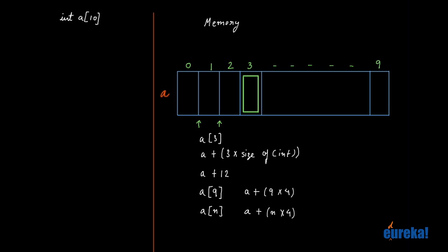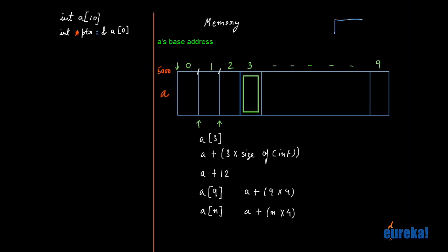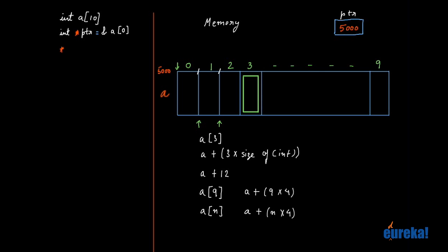Now let's say I declare a pointer — an integer pointer: int *ptr. And I initialize the pointer to the first integer in the array, so I can say the address of A[0]. A[0] has an address, A[1] has an address. Let's say A[0] has an address of 5000. So I say int *ptr = &A[0], which is 5000. He's going to allocate ptr in memory holding the address 5000. So if I say *ptr, he goes to address 5000 and fetches an integer, which is nothing but A[0].